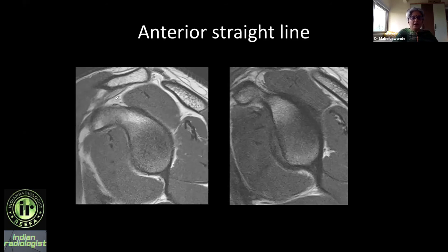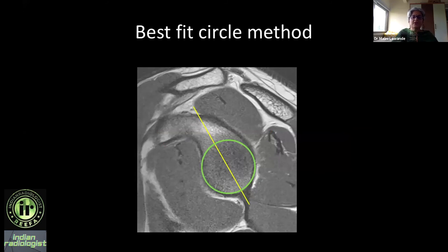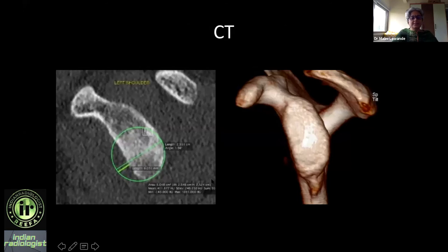We use the best-fit circle method. Draw a line along the glenoid axis and fit a circle to the posterior inferior quadrant of the glenoid. Measure the posterior diameter and the anterior diameter — they should be roughly equal. If bone is lost anteriorly, the formula is: (total circle diameter minus actual anterior diameter) divided by total circle diameter, multiplied by 100, giving the percentage bone loss.